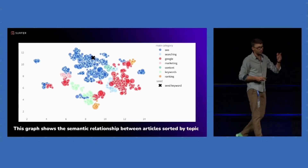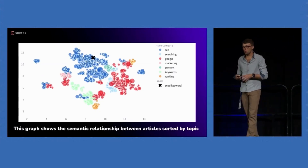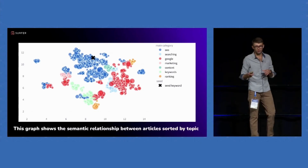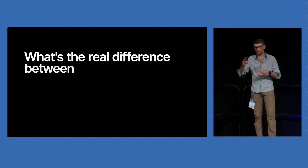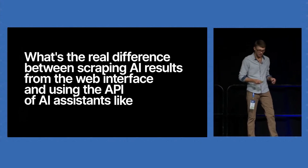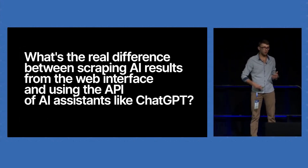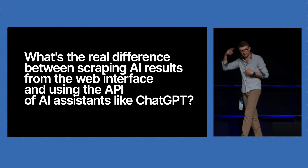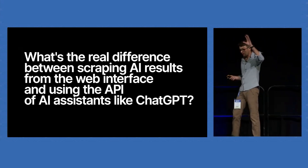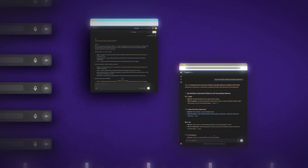It all started when Surfer's own Michael Suski was at the Chiang Mai SEO conference. After his talk, an attendee asked him: what's the real difference between scraping AI results from the web interface and using the API of AI assistants like ChatGPT? Michael was honest and admitted he didn't know, so he said he'd test it. That same evening, he sent a scope to Surfer's data science team. Three weeks and 2,000 prompts later, they had an answer.